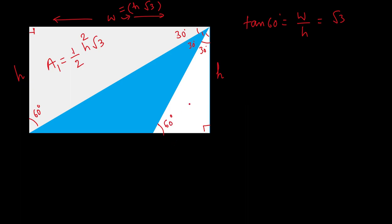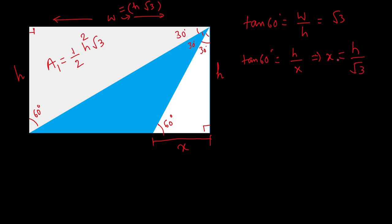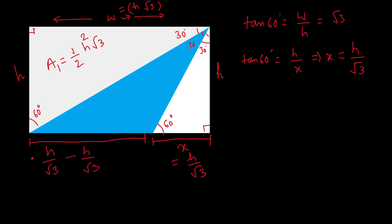This bottom angle is also 60°. If this side is h, we use tan 60° = h divided by the base length x, so x = h/tan 60° = h/√3. The full width is h√3, so the remaining base length is h√3 minus h/√3. Taking √3 as the common denominator, that gives us (3h − h)/√3 = 2h/√3.